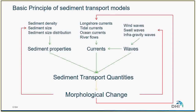For the sediment transport model, this is a schematic description of the different input parameters and how they are combined to simulate sediment transport and morphological changes. We have our inputs — sediment properties — and then waves and currents that move and agitate the sediments. This leads to sediment transport quantities and, subsequently, morphological change. Once the area has changed, the next time step starts again and the forcing and properties are reassessed based on the updated morphology.